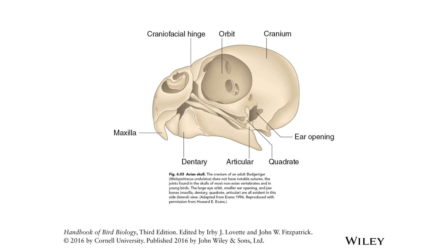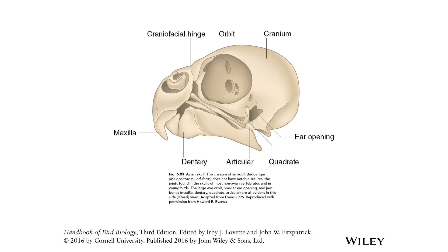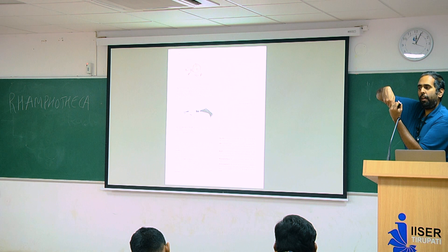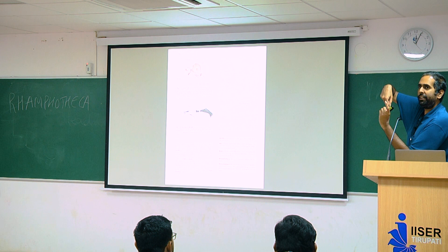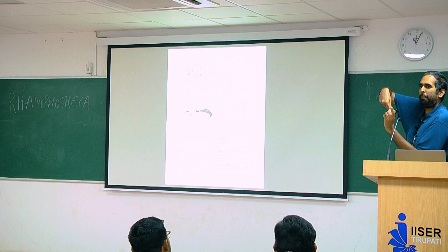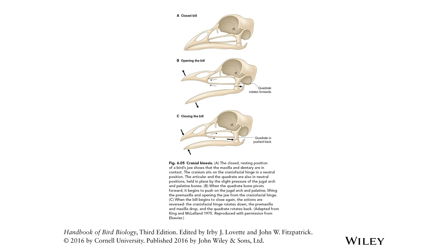There is a bone that connects the skull to the mandible — something called a quadrate. Think of a quadrate as a little lever. What's going to happen to this entire bone if the quadrate does this? It flips open. So if a muscle pushes the quadrate forward, the lower jaw opens.